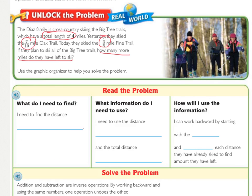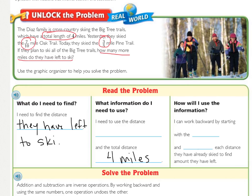Now we're going to look at our graphic organizer. What do we need to find? We need to find the distance of what they have left to ski. What information do we need to use? We circled 4 miles, 7 tenths, and 3 fifths. We need to use the distance skied and the total distance. We know the total distance is 4 miles. To figure out what they have left to ski, we need to know what they have already skied — the 7/10 mile Oak Trail and the 3/5 mile Pine Trail.